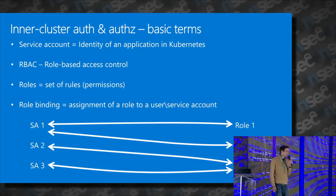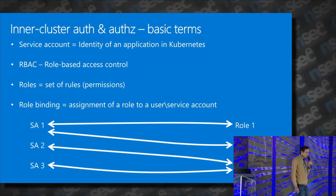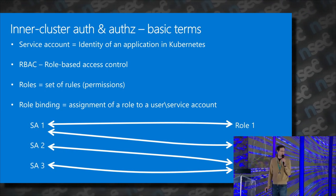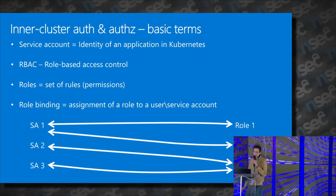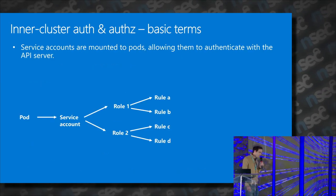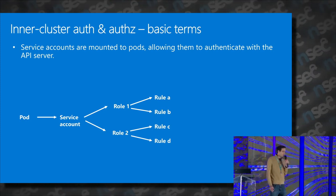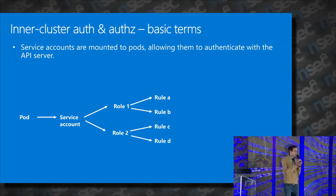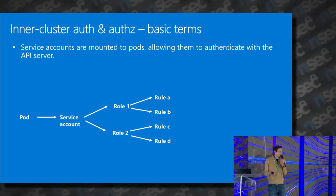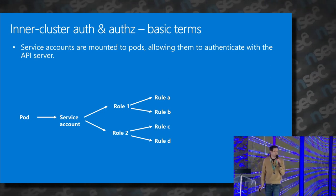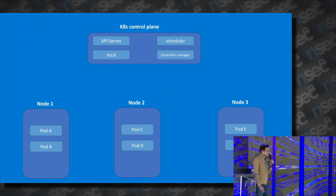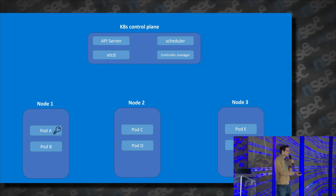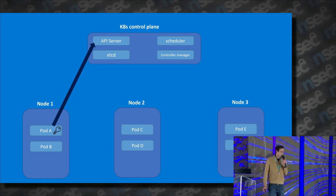For example, here we have service accounts 1, 2, and 3, and roles 1, 2, and 3. Service account 1 has roles 1 and 2, and role 3 has service accounts 2 and 3 attached to it. Service accounts can be mounted into pods, allowing the pods to authenticate with the API server. So the full chain looks like this: the pod has a service account mounted to it, the service account has roles attached to it, and each role has permissions, which are the rules.